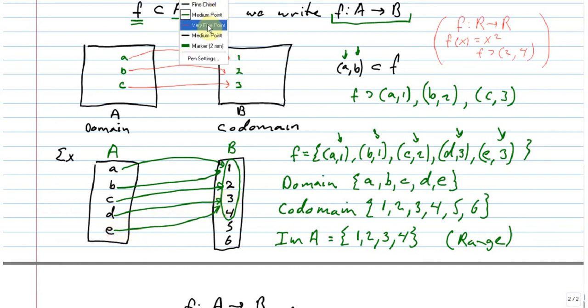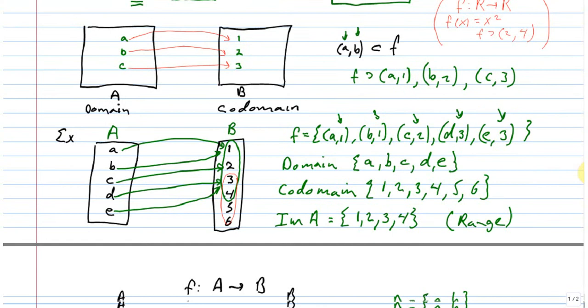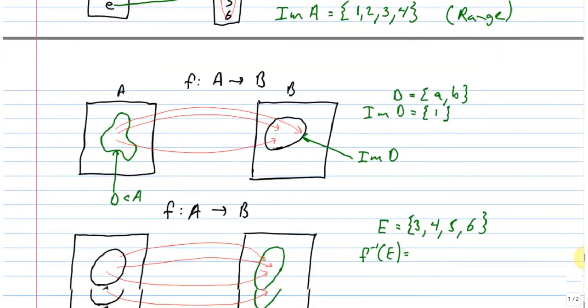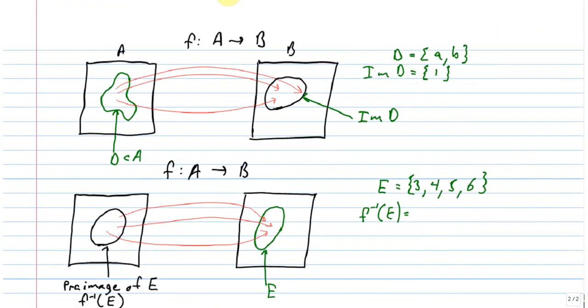So if I circle E here, which I think I said was {3, 4, 5, 6}, there are only two elements that end up mapping to something in that set. So it's D and E. So the pre-image of this set E is just {d, e}.